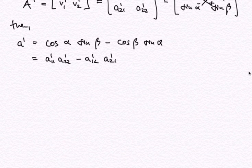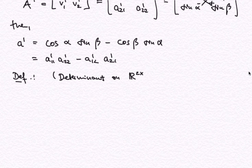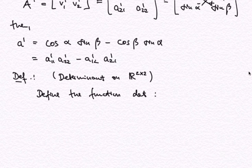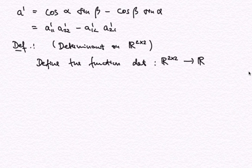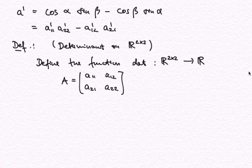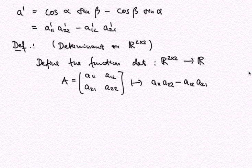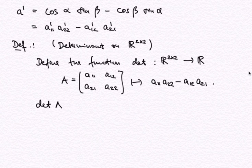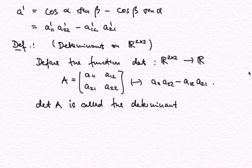I define the determinant on ℝ²ˣ²: it is a function from ℝ²ˣ² to ℝ that assigns every 2×2 matrix a single real number. It takes a matrix with entries A11, A12, A21, A22, and assigns the number (product of the diagonal elements) minus (product of the off-diagonal elements). This function is called the determinant of the matrix A.